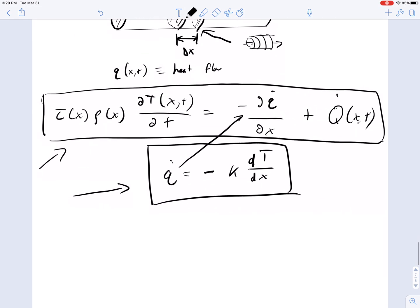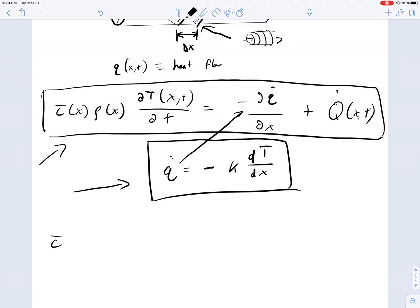So what we have here, if we make this substitution, C bar of x, the heat capacity, times the density, times the partial derivative of temperature with respect to position and time,